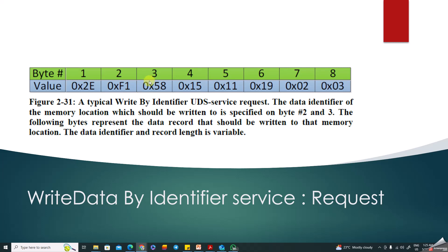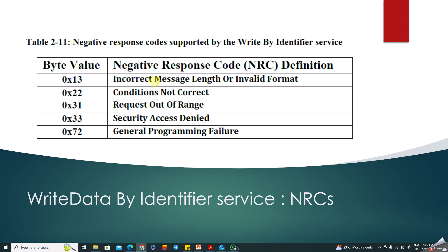Write Data by Identifier supports the same NRCs: 0x13, 0x22, 0x31. Additionally, NRC 0x33 — security access denied — applies because writing requires special permission, unlike reading. You must unlock the ECU before writing using the Security Access Service. If writing fails, you may also get NRC 0x72 for general programming failure.